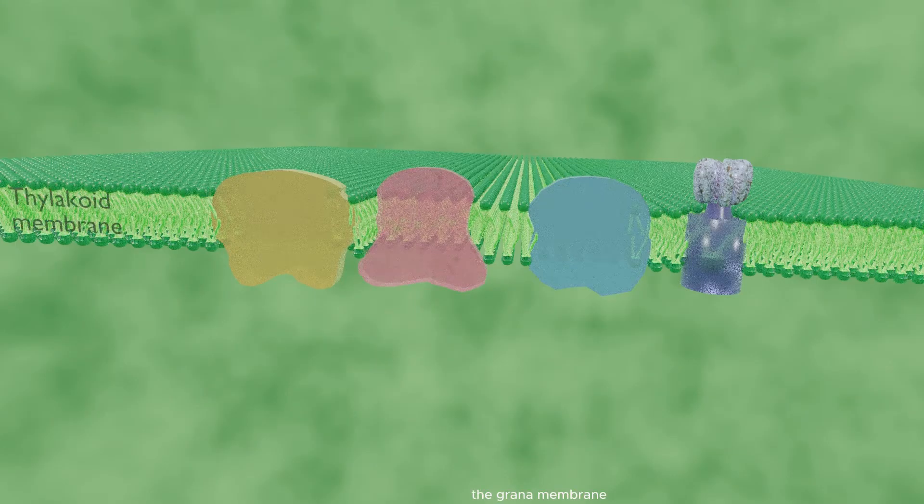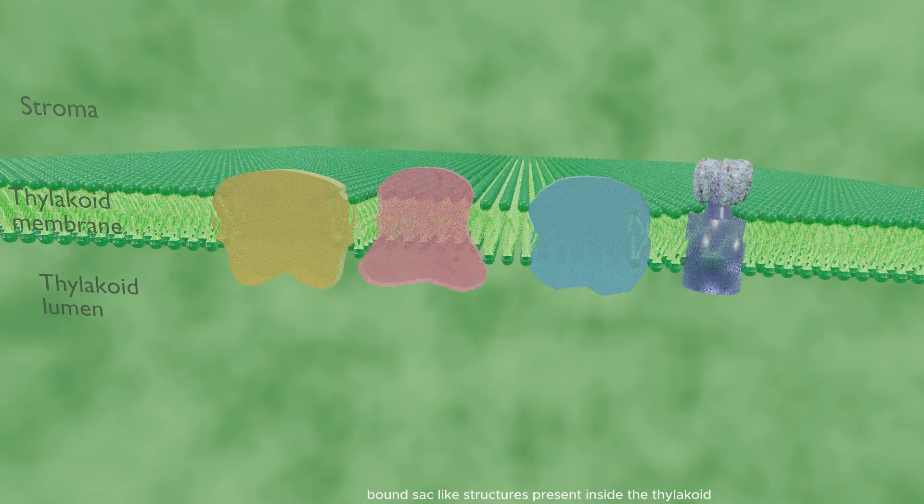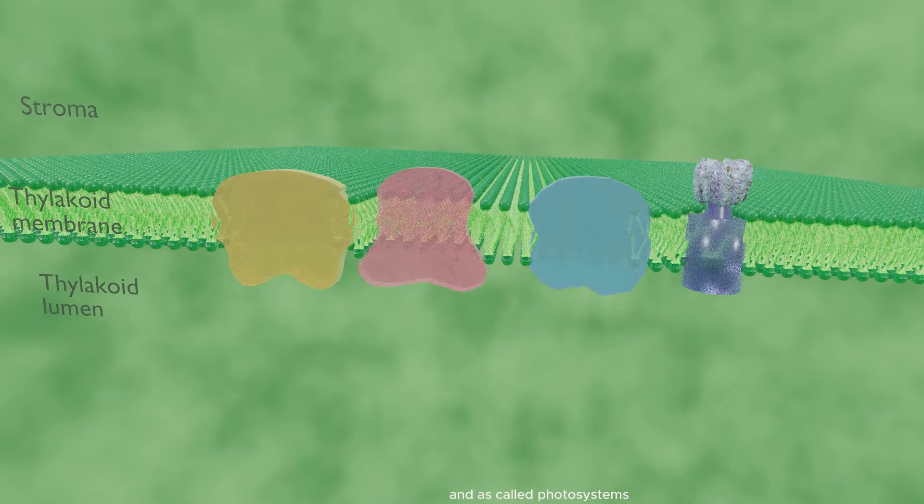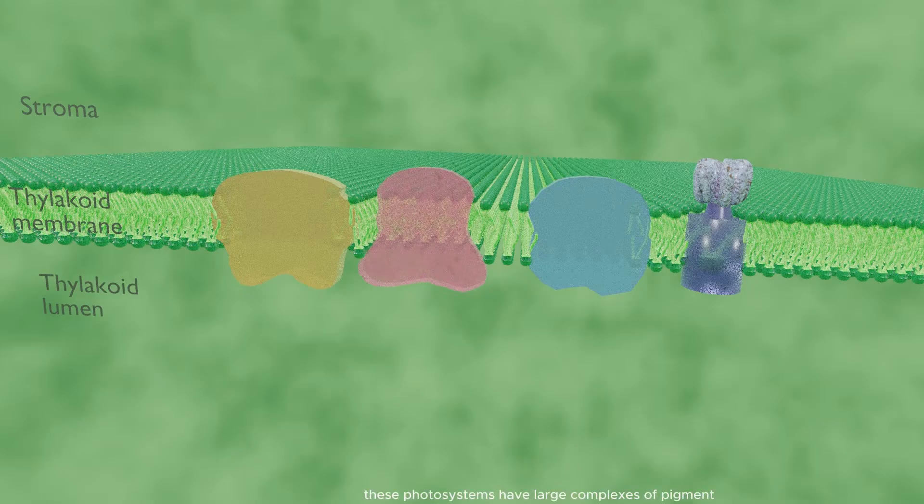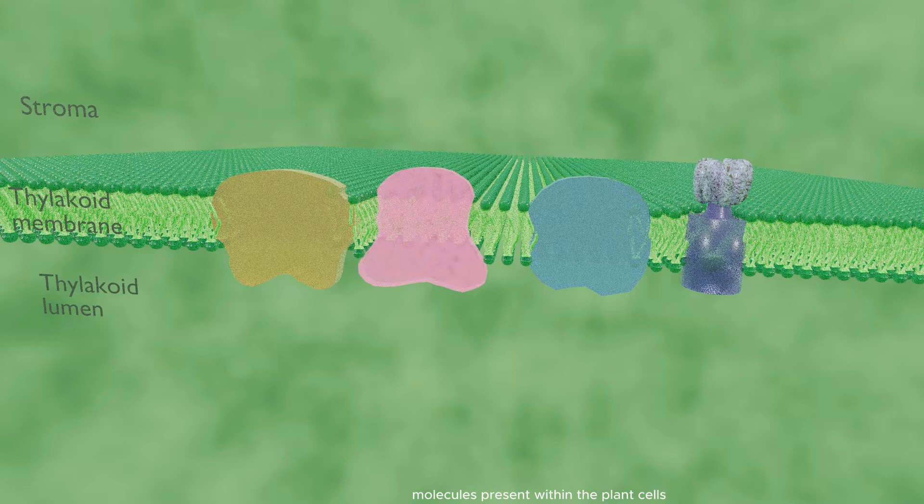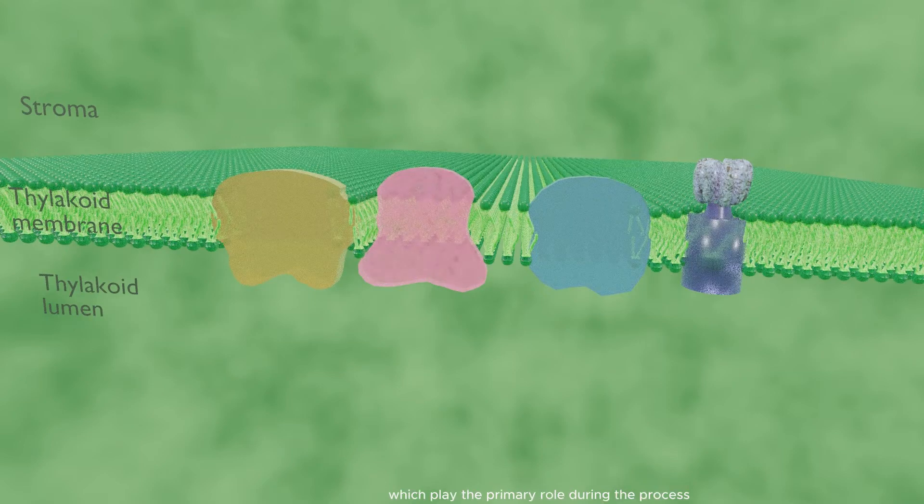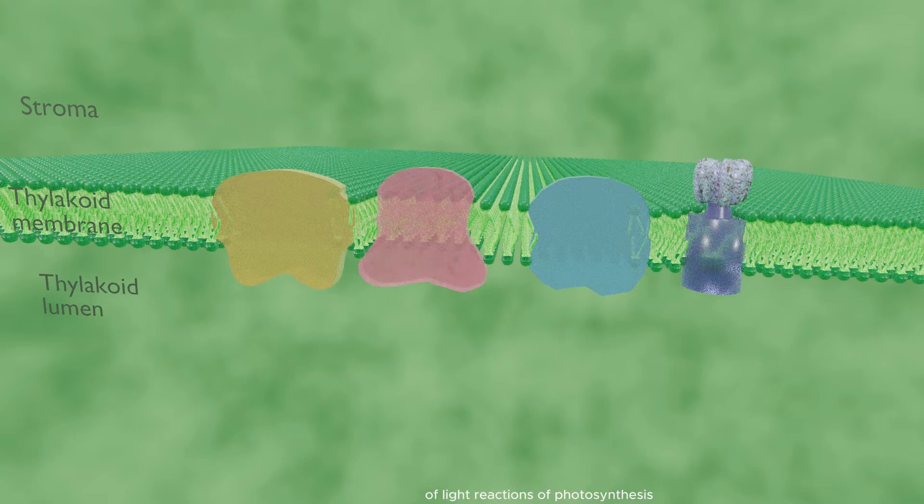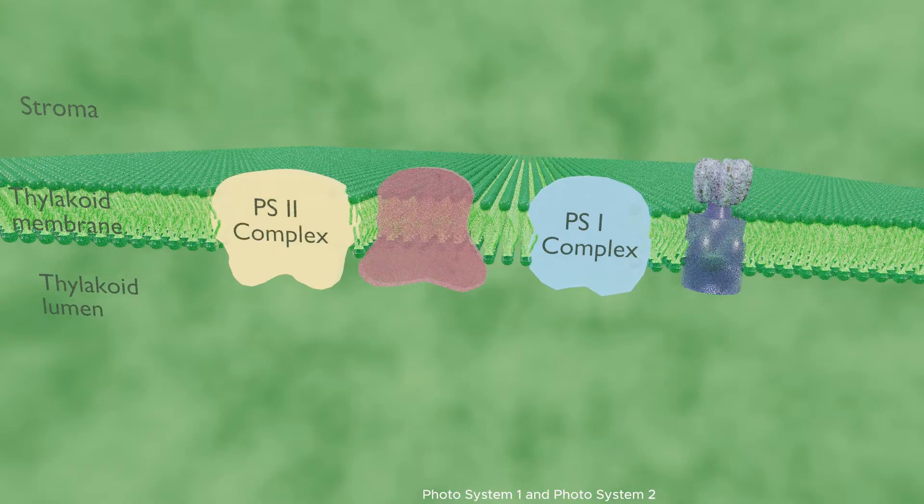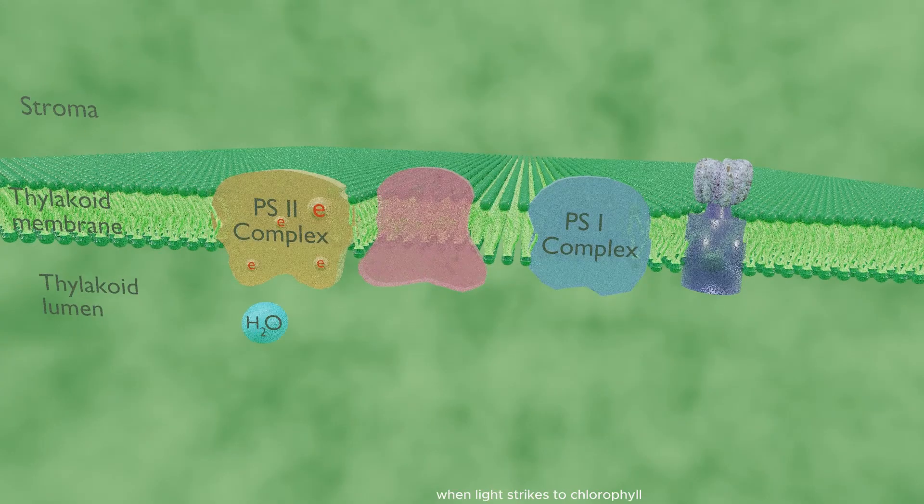The grana are membrane-bound sac-like structures present inside the thylakoid that function by gathering light and are called photosystems. These photosystems have large complexes of pigment and protein molecules present within the plant cells which play the primary role during the process of light reactions of photosynthesis. There are two types of photosystems: photosystem one and photosystem two. When light strikes chlorophyll,